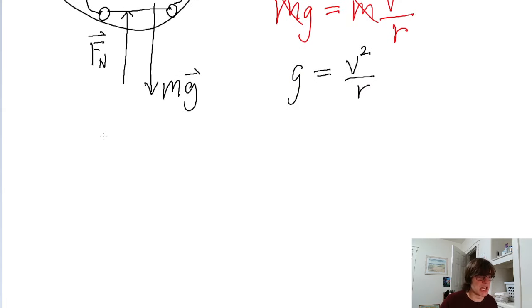And we can do that pretty simply by multiplying both sides of the equation by R, so that V squared is equal to R G. And then taking the square root of both sides, we find that V is equal to the square root of R G. So that's our final formula.